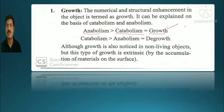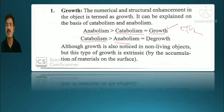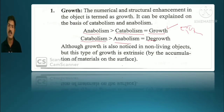For example, take a dog. If it gets good food, it will grow. But if anabolism stops and catabolism increases, the consumption of energy exceeds construction, breakdown becomes more, food intake is less — then growth will not occur.